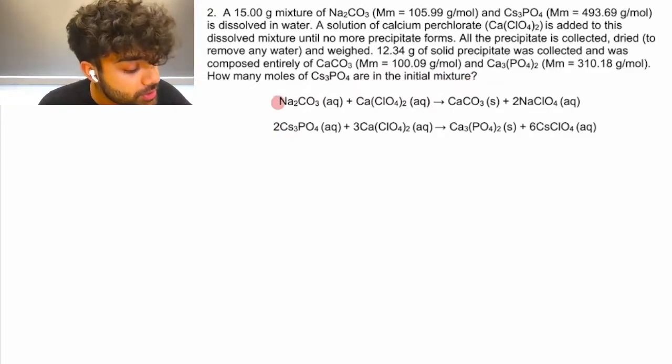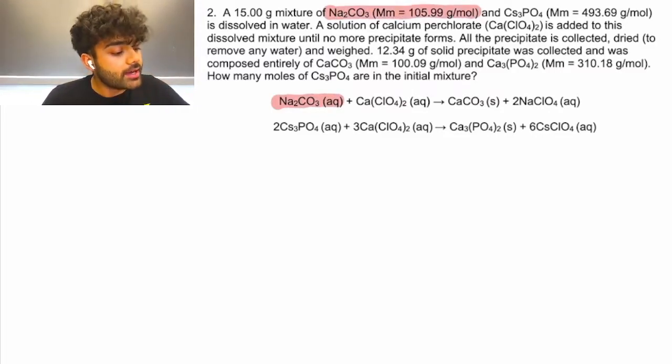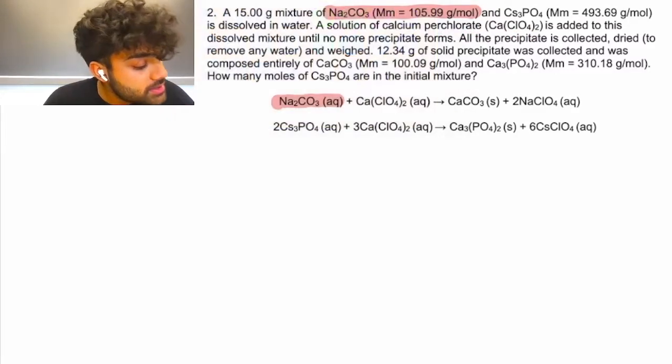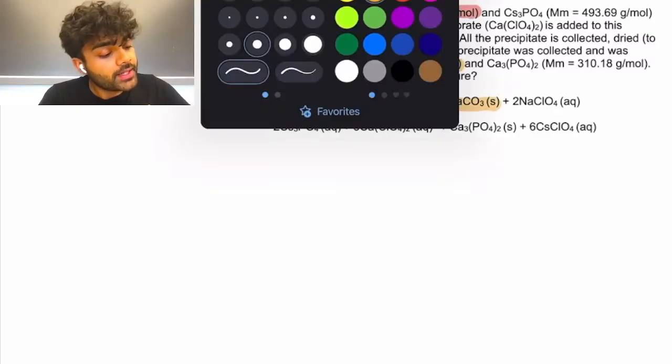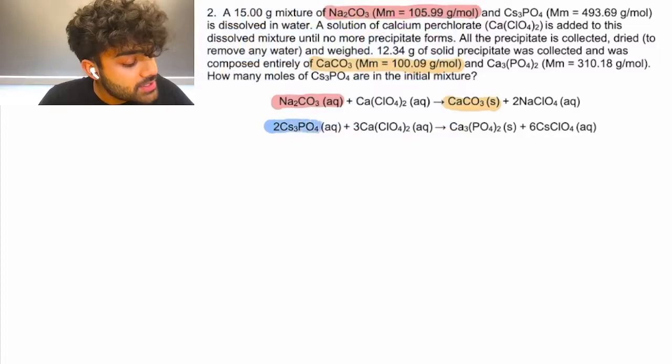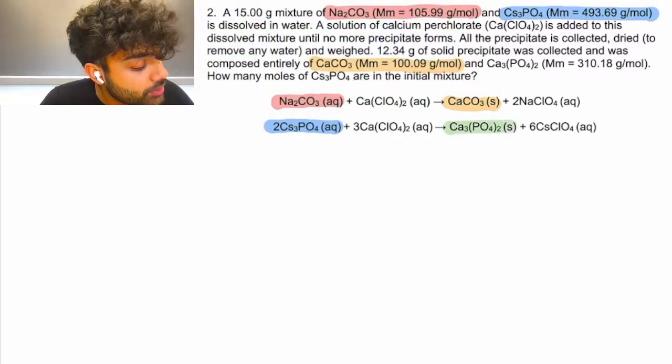We know that in our first reaction we have Na2CO3, and we're given its molecular mass. That reacts with calcium perchlorate to form a solid CaCO3, and we're given its molecular mass plus another aqueous product. Now in our second reaction we have CS3PO4, which we're given its molar mass, reacts with the same calcium perchlorate to form Ca3PO42 solid, which is also given its molar mass.